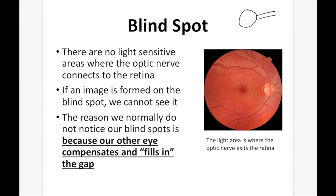In other words, this will be the optic nerve here, and this will be the eye. On the back of the eye is the retina. The retina takes in the information and sends it to the brain. There's a spot where the two of them connect, and if any image is focused on that spot, it won't be detected because there are no light-sensing cells there. The reason we normally don't notice our blind spot is because we have two eyes, and the other eye compensates.